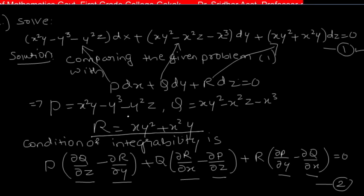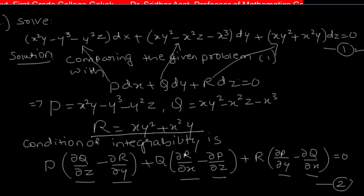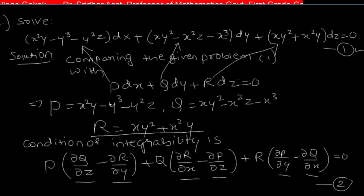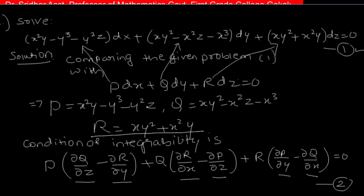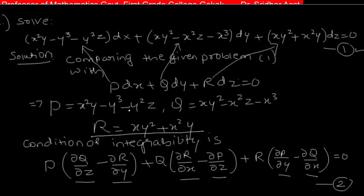Differentiating R with respect to x gives ∂R/∂x = y² + 2xy. Then differentiating P = x²y - y³ - y²z with respect to z: the first two terms have no z, only the last term -y²z gives -y². So ∂P/∂z = -y².